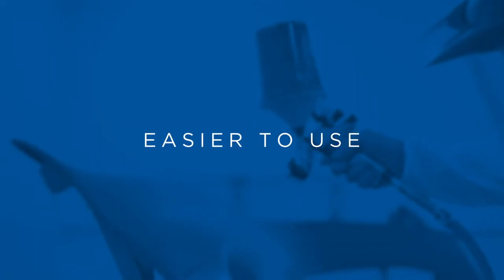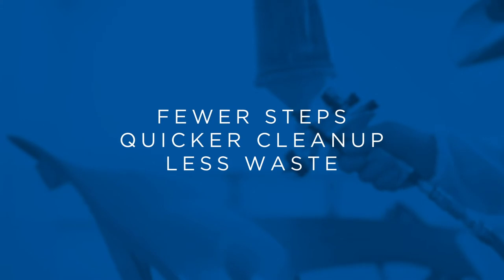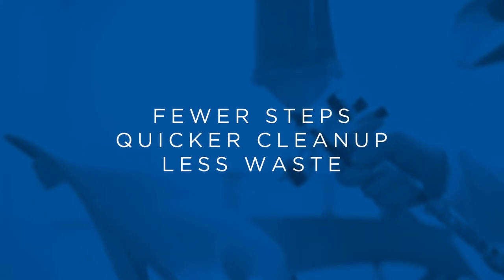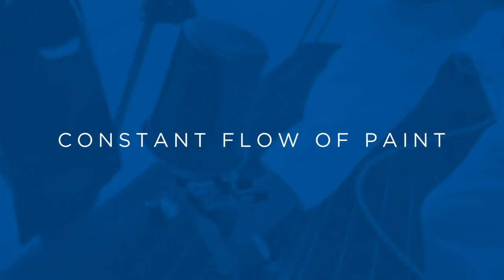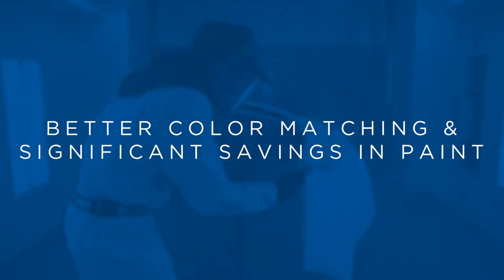Snap and Flow is easier to use with fewer steps, quicker cleanup, and less waste. This innovative system is designed to create a constant flow of paint from the cup through the gun. This results in better color matching and a significant savings in paint.